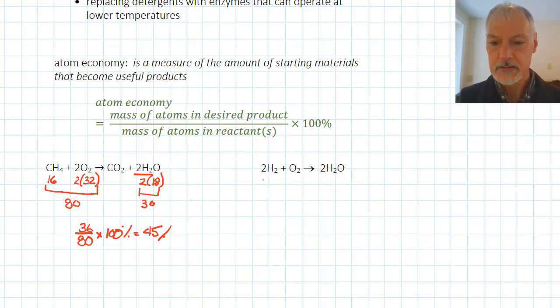My second method, I'll do a similar set of operations. I have two hydrogens at two apiece, and I have one oxygen at 32, and two waters are being produced at 18. So this total is 36, and on this side, 36. So this particular method would be 100% efficient in terms of the atoms that are used.